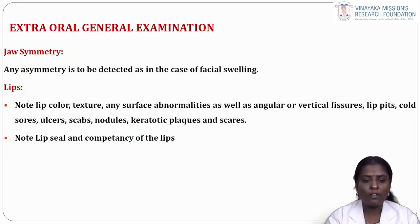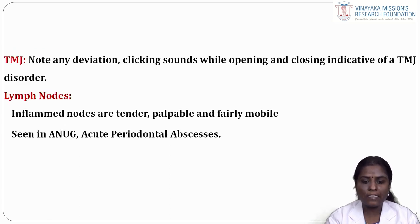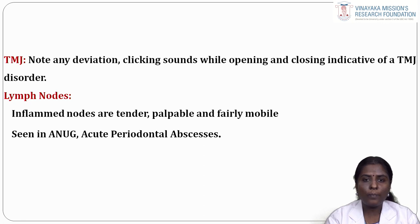In the extraoral general examination, we should assess jaw symmetry — any asymmetry such as facial swelling should be detected. Lips: note the lip color, texture, any surface abnormalities such as angular or vertical fissures, cold sores, ulcers, scabs, nodules, keratotic plaques and scars. Note the lip seal and competency of the lips. For TMJ, note any deviation or clicking sounds while opening and closing, which are indicative of a TMJ disorder. For lymph node examination, inflamed nodes are tender, palpable and fairly mobile — seen in ANUG and acute periodontal abscess.